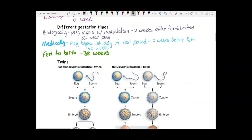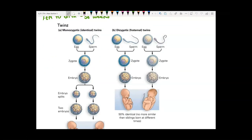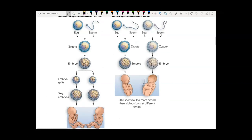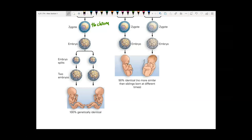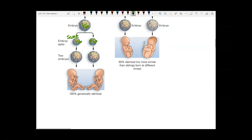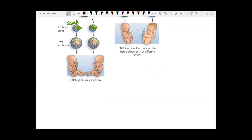Another thing that can happen during fertilization is twins — either fraternal or identical. Monozygotic means identical twins: one egg, one sperm, one zygote with 46 chromosomes. That embryo then splits, so you have the same 46 chromosomes in each. You get two babies that are 100% genetically identical, with the same 46 chromosomes.